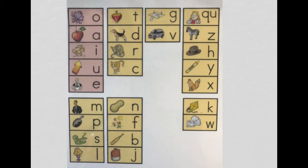Ready? Let's go! Octopus, octopus, ah, ah, ah. Apple, apple, ah, ah, ah. Itch, itch, itch. I, I, I, I. Up, up. U, U, U, U. Ed, ed. Eh, eh, eh.